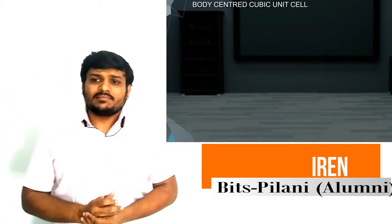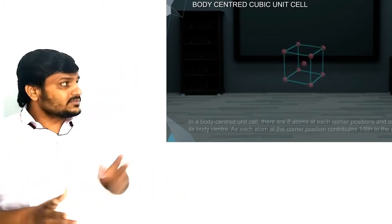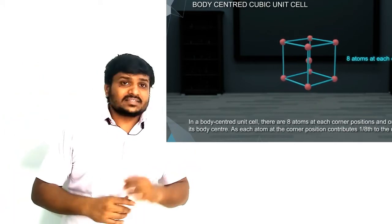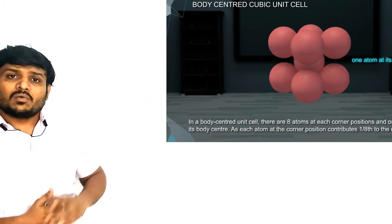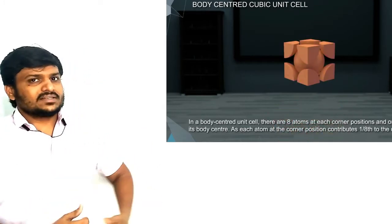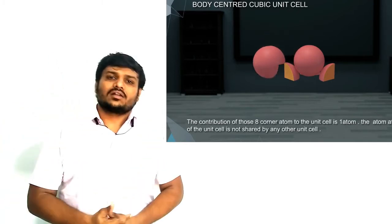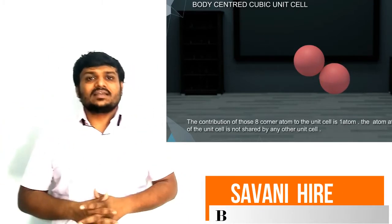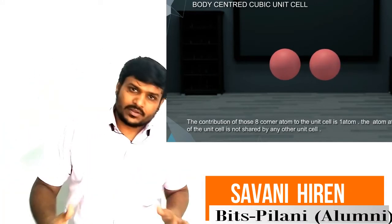The next unit cell is BCC — body-centered unit cell. All atoms are present on the corners, contributing one atom in total from the corners, and another atom is in the center contributing one full atom. So in BCC we get two atoms per unit cell. BCC requires nine atoms to build, but the unit cell accounts for only two atoms per unit cell.